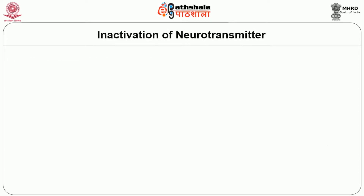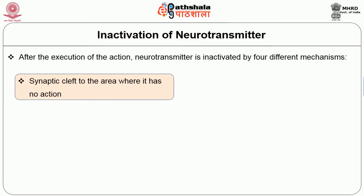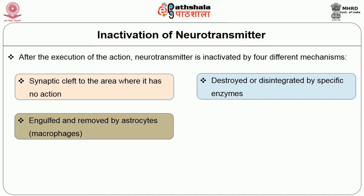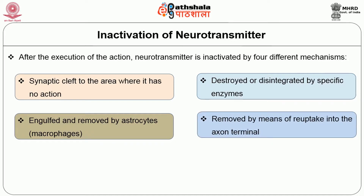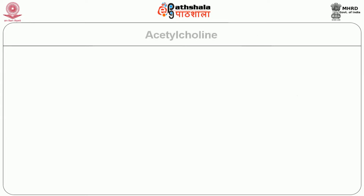After the execution of its action, neurotransmitters are inactivated by four different mechanisms: they may diffuse out of the synaptic cleft to an area where they have no action; they may be destroyed or disintegrated by specific enzymes; they may be engulfed and removed by astrocytes; or they can be removed by reuptake into the axon terminal. Reuptake is a process by which the neurotransmitter is taken back from the synaptic cleft into the axon terminal after execution of its action, involving a specific carrier protein for each neurotransmitter.